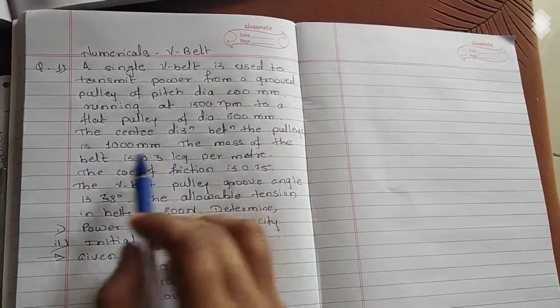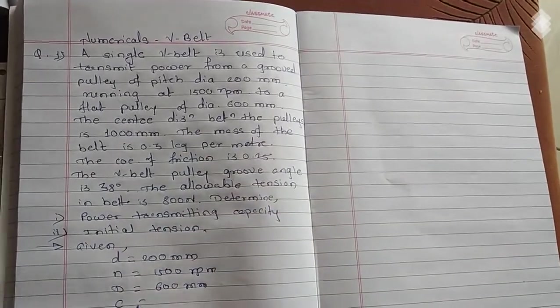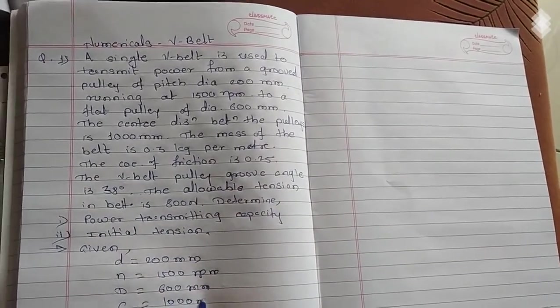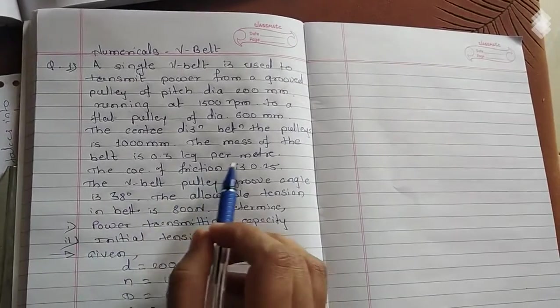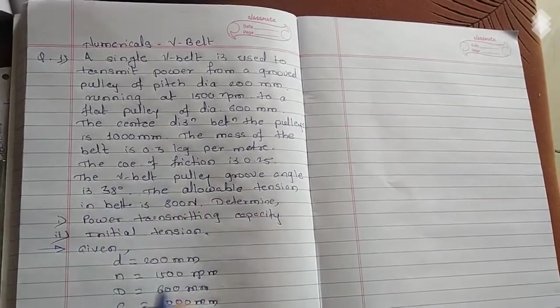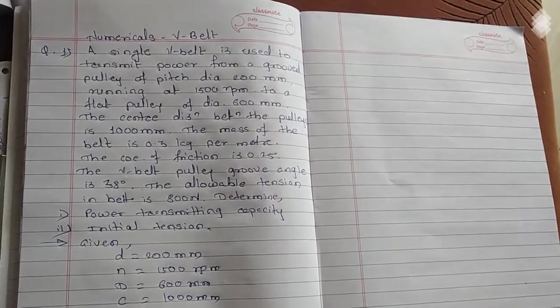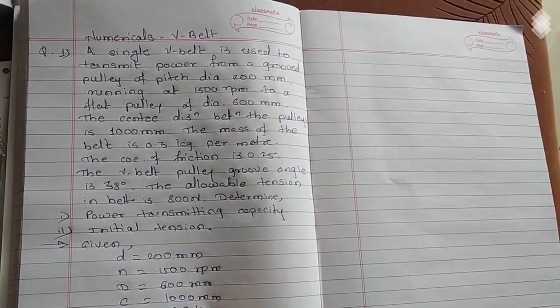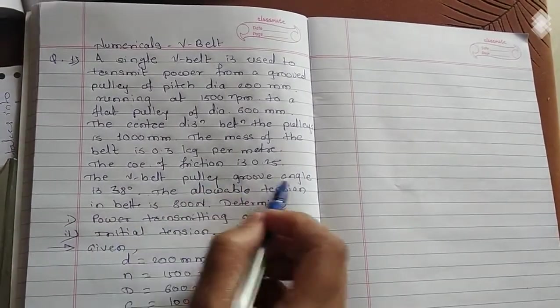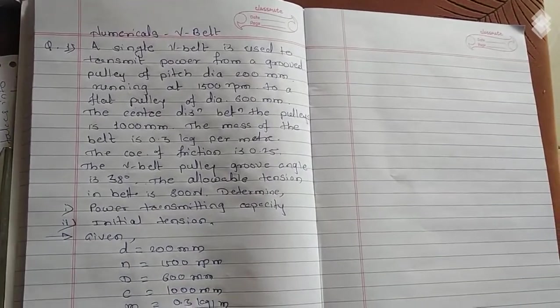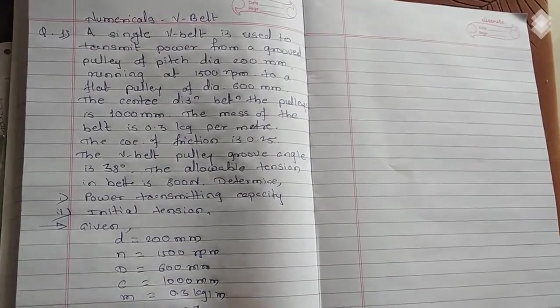The center distance between the pulleys is given, C equals 1000 mm. Then mass of the belt is 0.3 kg per meter, small m is given 0.3 kg per meter. Then coefficient of friction is given, mu equals 0.25.